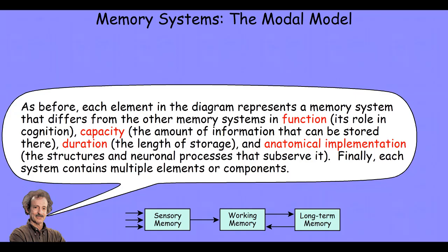As we move into our discussion of sensory memory, we'll see that each element in the diagram represents a memory system that differs from other memory systems in function, its role in cognition, capacity — the amount of information that can be stored there — duration, the length of the storage, and anatomical implementation, the structures and neuronal processes that serve it. Finally, each system contains multiple elements or components.